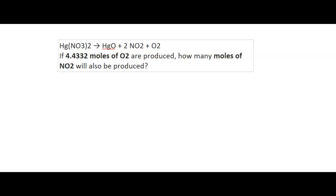So what we want to do is figure out what relationships are going to help us get from moles of O2 to moles of NO2. Now we already have the balanced equation given to us here. This is our balanced equation. So remember, our balanced equation tells us our mole ratio.